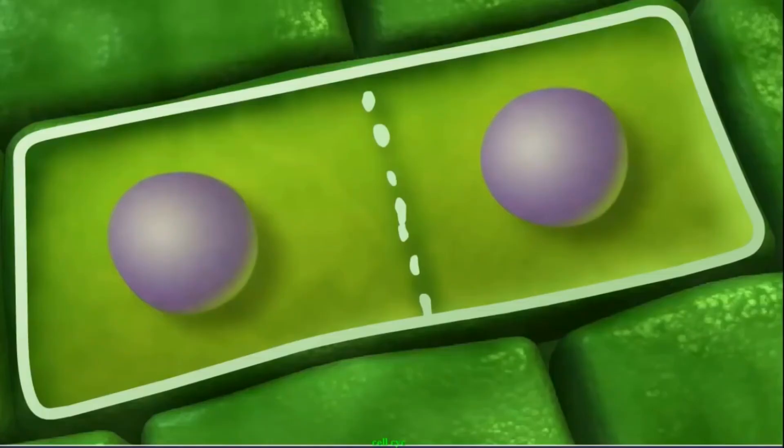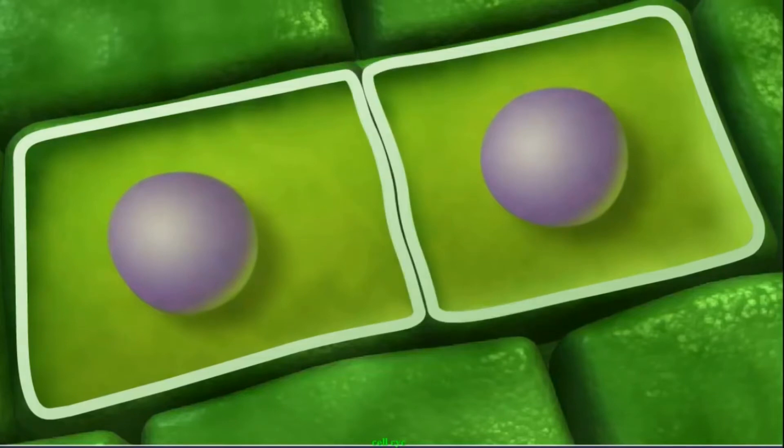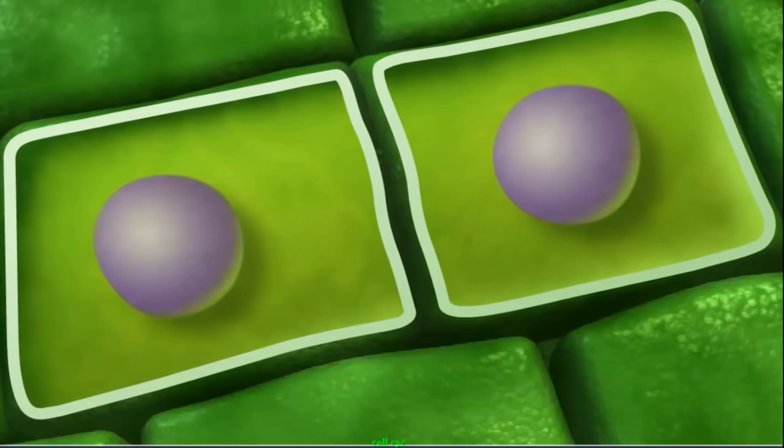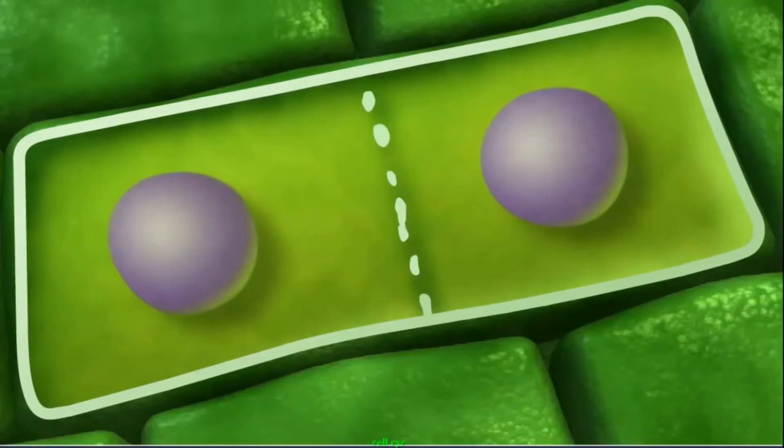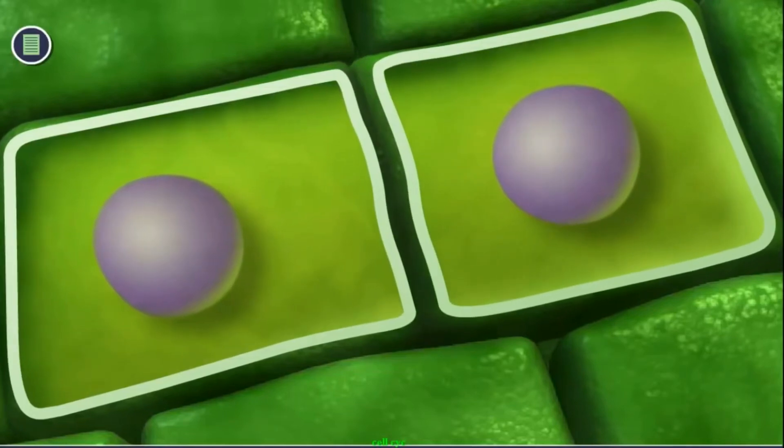Now let's take a look at cytokinesis, which is the last part of the cell cycle. Cytokinesis is the process in which the cytoplasm of a single cell divides to form two daughter cells. After the plant cell separates the sister chromatids and builds new nuclear membranes to create two nuclei, it divides its cytoplasm into two parts by forming new plasma membrane and cell wall down the middle of the cell.